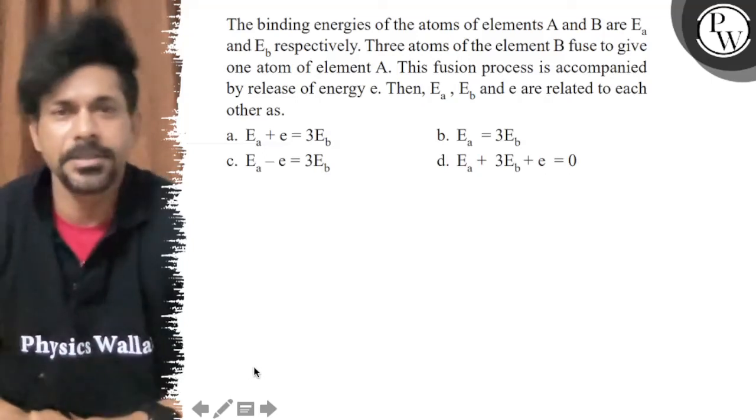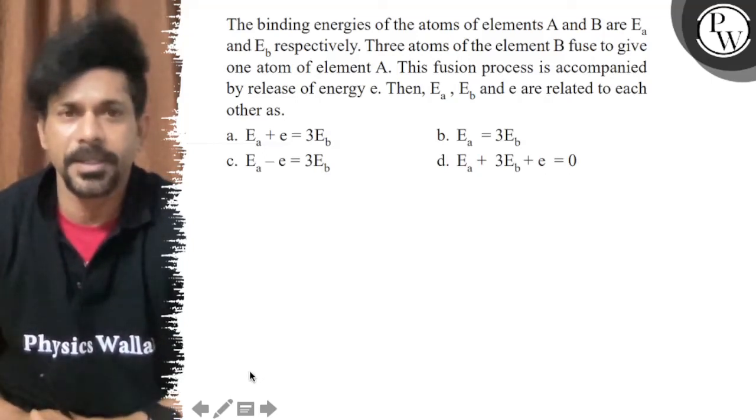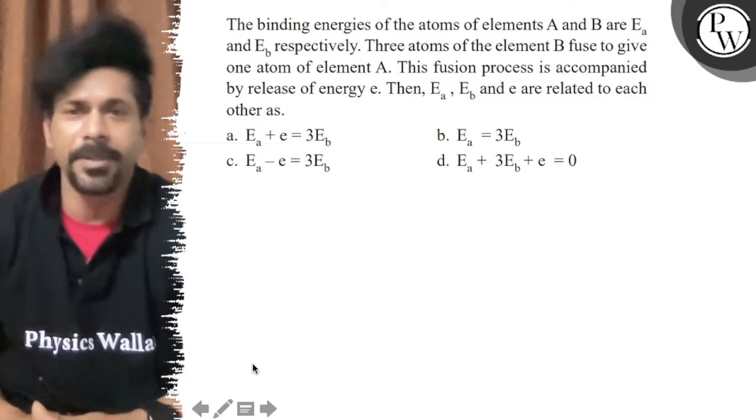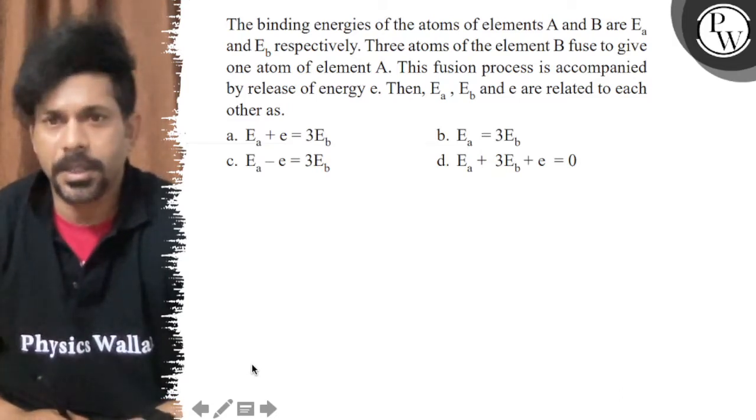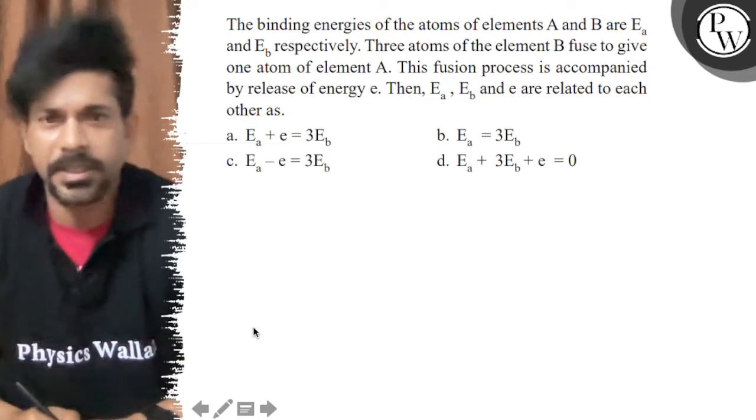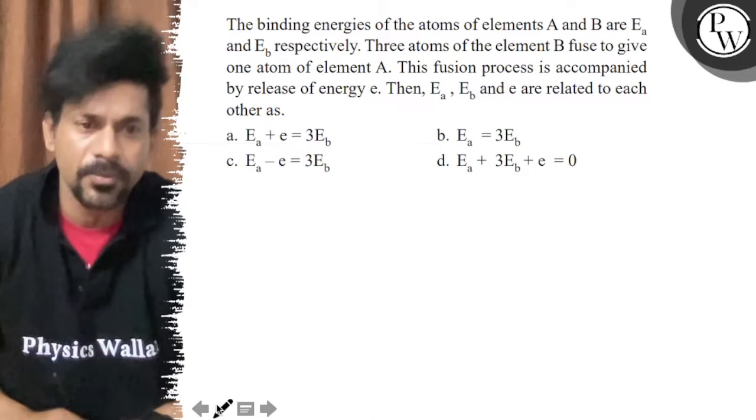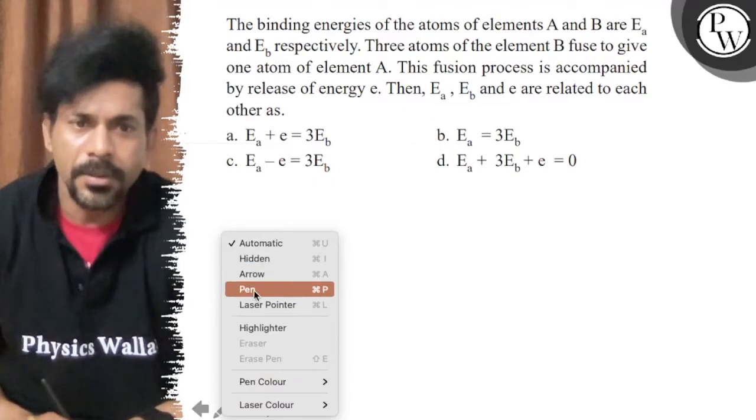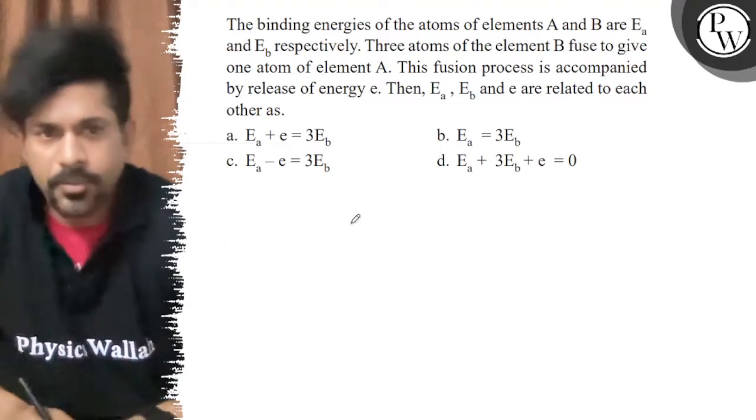Hello, let's see the question. The binding energies of the atoms of elements A and B are Ea and Eb, respectively. Three atoms of element B fuse to give one atom of element A. This fusion process is accompanied by the release of energy e. Then, Ea, Eb, and e are related to each other as which option?